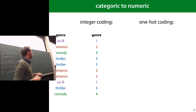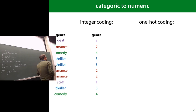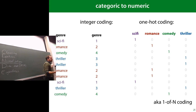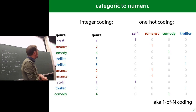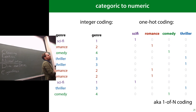The solution is one-hot coding: instead of turning one categorical feature into one numeric feature, you turn it into as many numeric features as you have categories. For each instance, all values are zero except for the relevant genre, which is one. This tells the algorithm that genres are a set, not an ordered list.